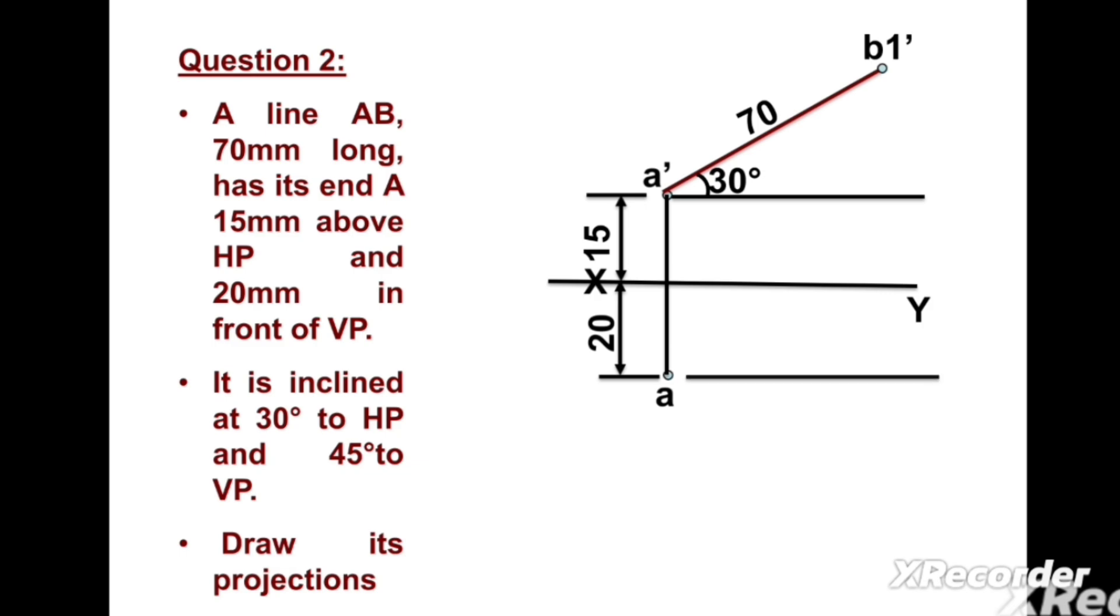Now we can draw a line passing from point a having any length. At an angle phi equal to 45 degrees, we can draw one line having length 70mm. Point b2 we can mark here.